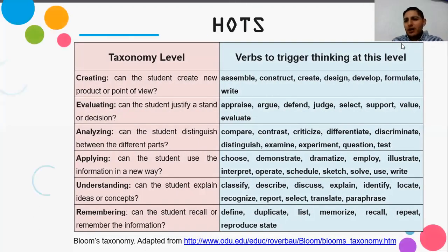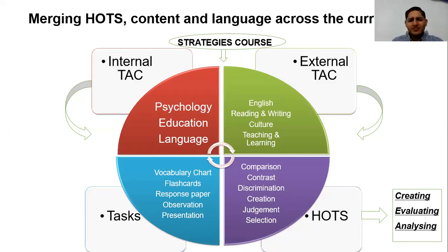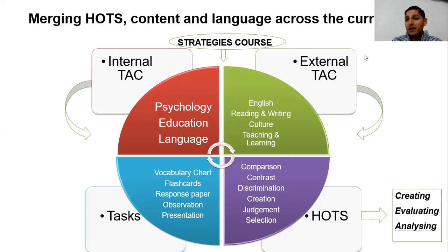This is a chart that shows the previously mentioned verbs according to Bloom's taxonomy in order for you to corroborate what I decided to use for each of the tasks I proposed. Then a representation of emerging higher order thinking skills, content, and language across the curriculum in this graph — which shows internal teaching across the curriculum, external teaching across the curriculum, the tasks I set, and the higher order thinking skills to be developed during the course by establishing specific instructions.